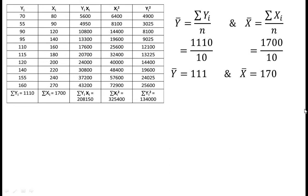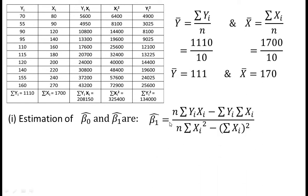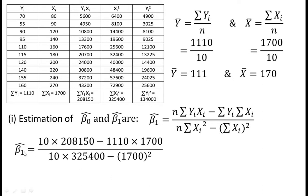Estimation of β₀ cap and β₁ cap. The OLS estimator of β₁ cap is equal to n times summation yi·xi minus summation yi times summation xi, divided by n times summation xi² minus (summation xi)². Putting all the aggregates found in the calculation table into this formula, we get β₁ cap equal to 0.534.